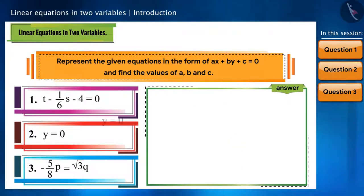In the second equation there is only one variable, so taking the second variable as 0, we will write it like this: 0x plus y plus 0 is equal to 0. Now comparing it with the general form, we will get a is equal to 0, b is equal to 1, c is equal to 0.